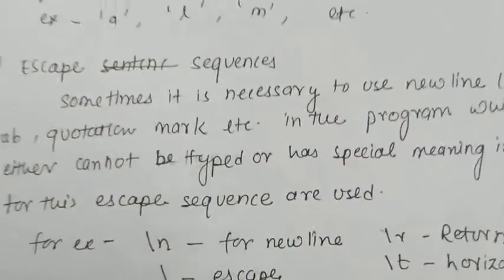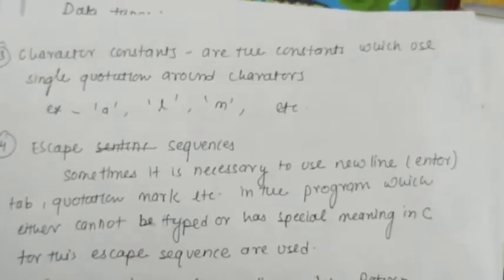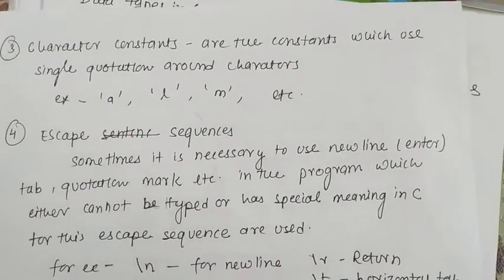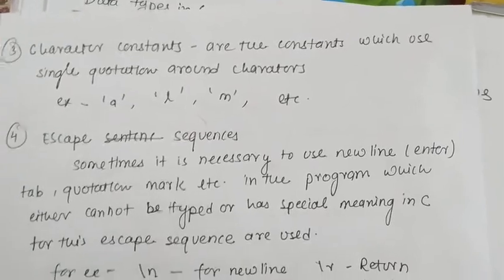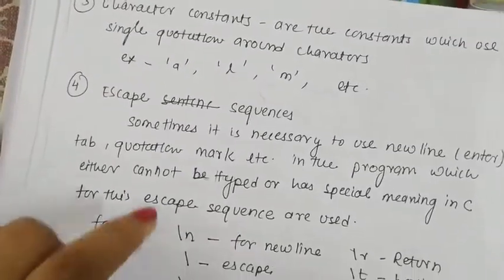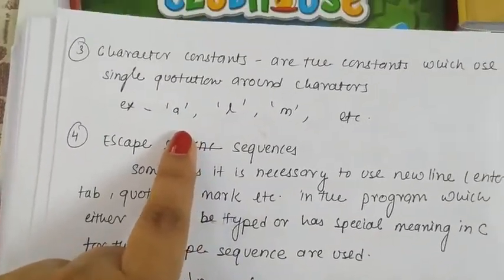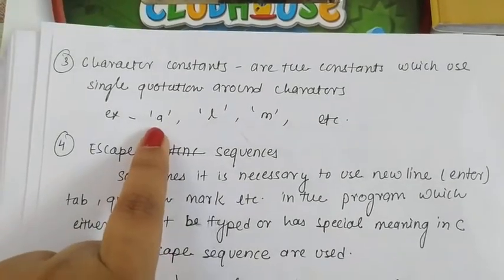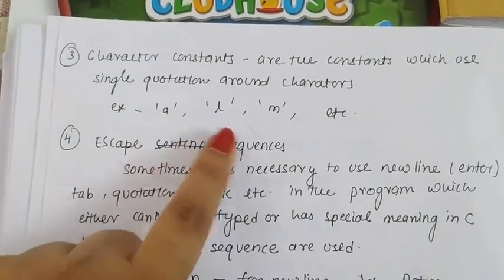We have character constants. Character constants are written in single quotation marks - within single quotation marks we write characters like 'a', 'l', 'm', etc.